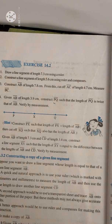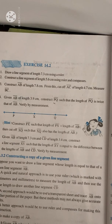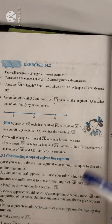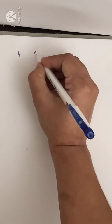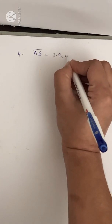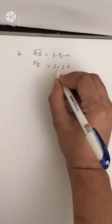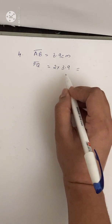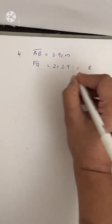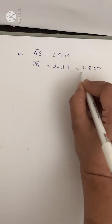Next let us do question number 4. Given AB of length 3.9 cm, construct PQ such that the length of PQ is twice that of AB. Verify by measurement. A hint is also given. PQ equals 2 times 3.9, which equals 7.8 cm.